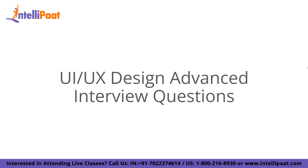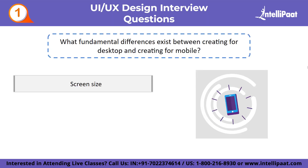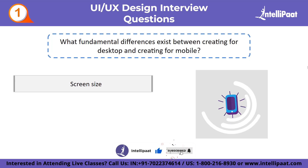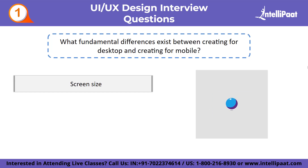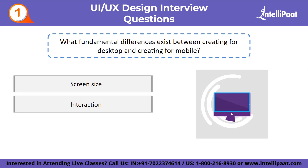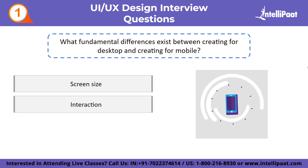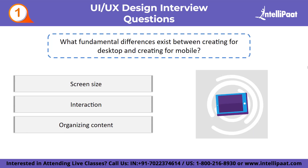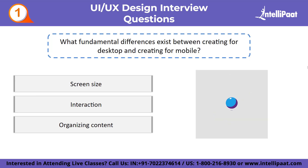Now let us look at advanced interview questions. The first: what fundamental differences exist between creating for desktop and creating for mobile? You can discuss the following differences. Screen size: there is a clear distinction between desktop and mobile screen sizes, which impacts layout design — desktop apps can have fixed navigation bars, whereas mobile menus must rely on pull-out menus. Interaction: desktop computers can fully utilize cursor interactivity, while mobile users must use gestures such as swiping, shaking, or poking. Organizing content: desktop apps can use multi-column formats, while scrolling is the primary option for mobile. Desktops are preferred for longer, more involved tasks, whereas mobiles are preferred for shorter tasks.